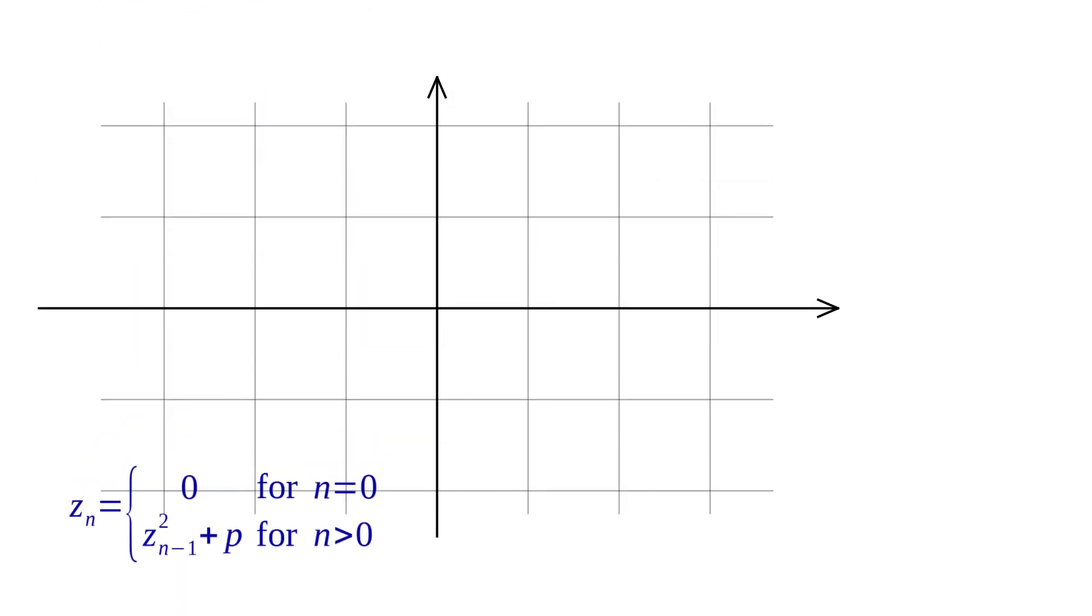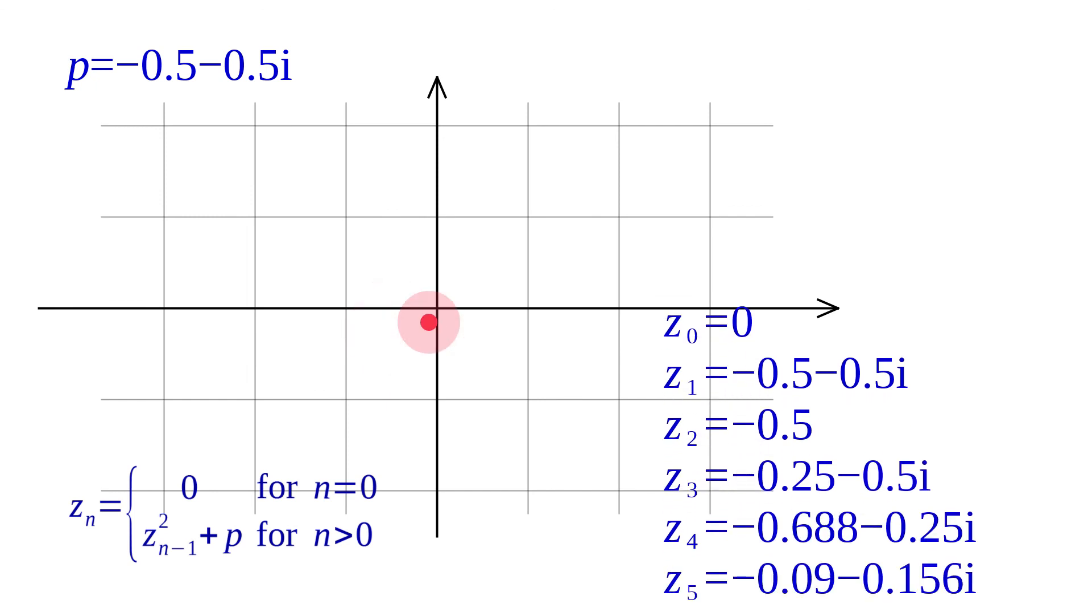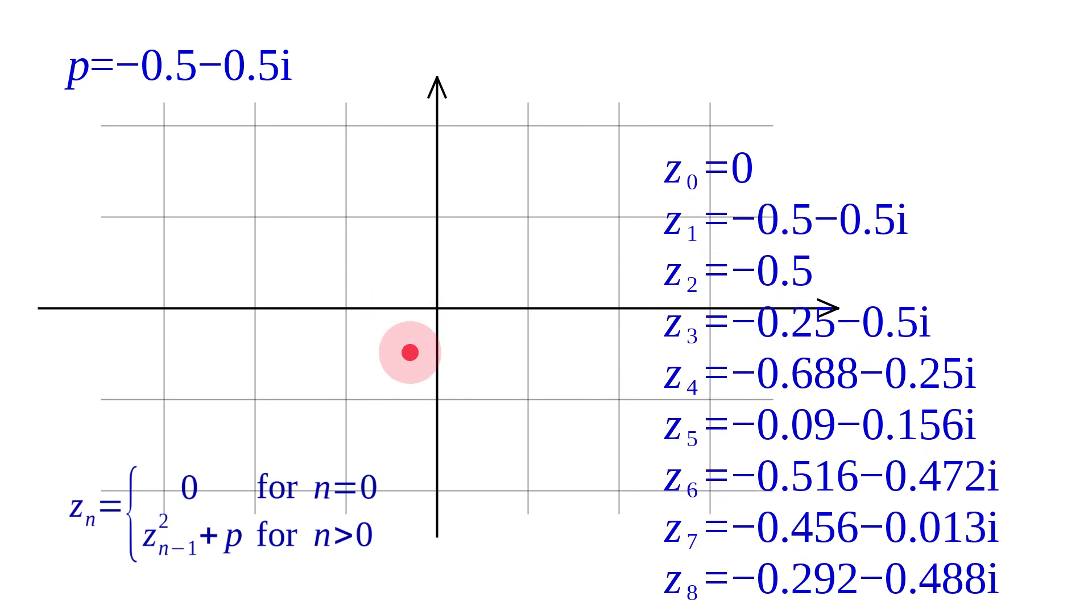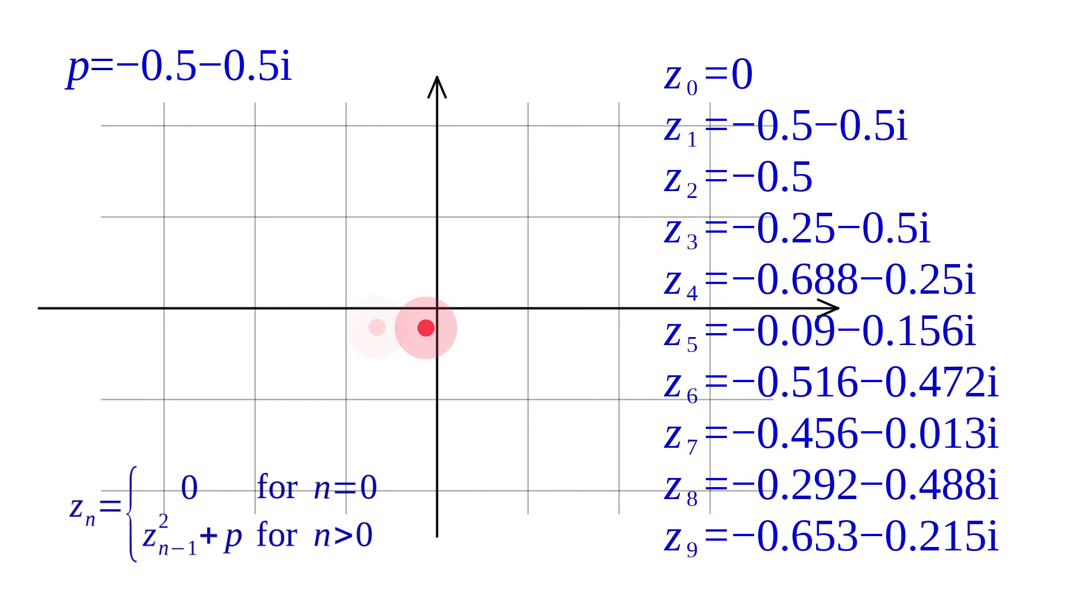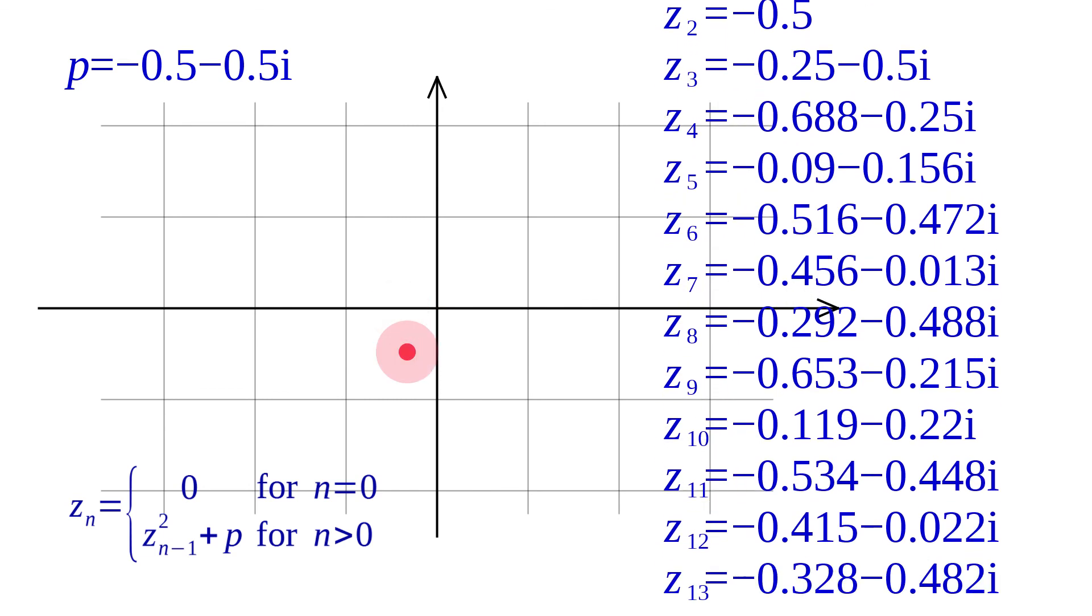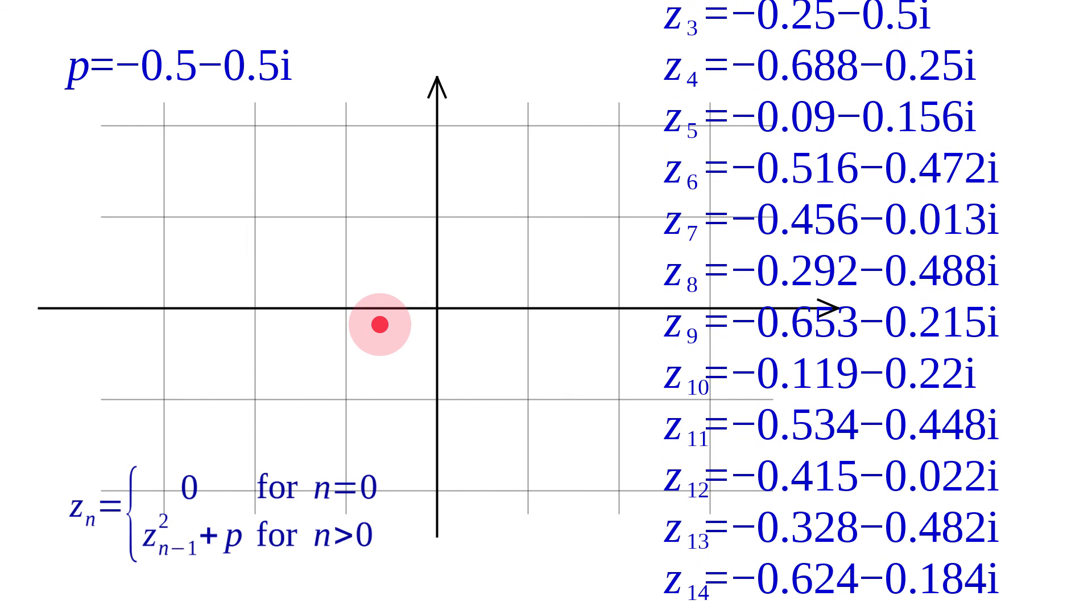Let's take another complex value: p equal to minus half minus half i. This time the values of Zn stay close to the origin of the coordinate system.